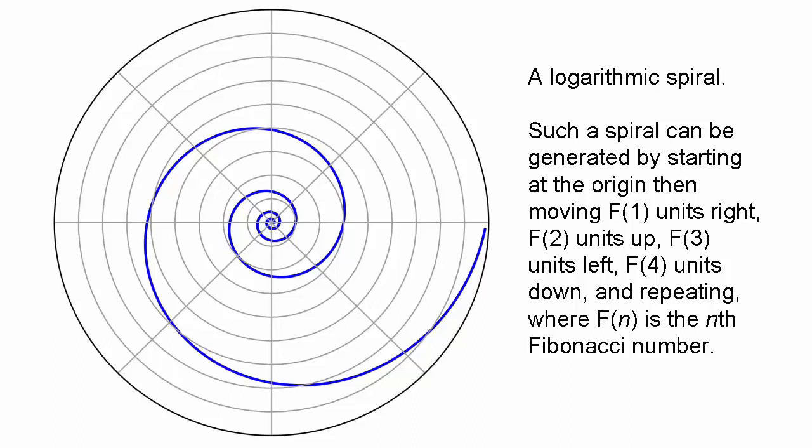The logarithmic spiral is approximated by the rule: start at the origin of the Cartesian coordinate system, move F₁ units to the right, move F₂ units up, move F₃ units to the left, move F₄ units down, move F₅ units to the right, and so on. By growing in this way on structures such as sunflowers, pine cones and pineapples, seeds are able to pack themselves together most efficiently.